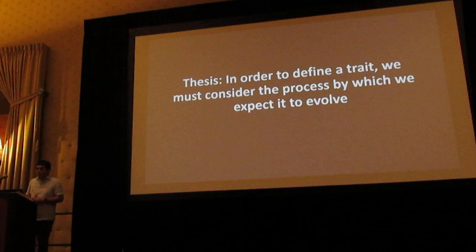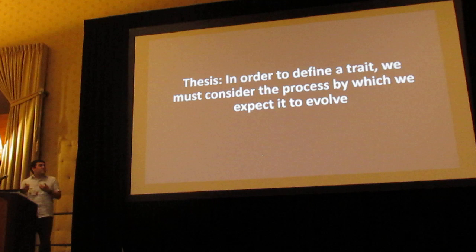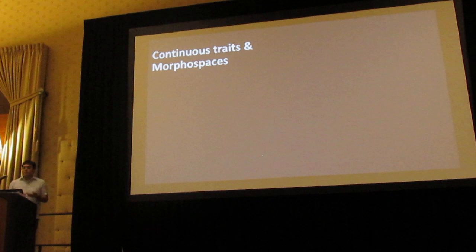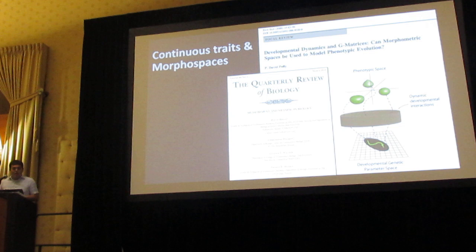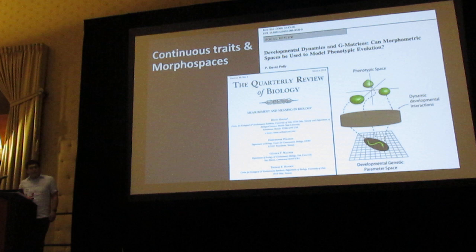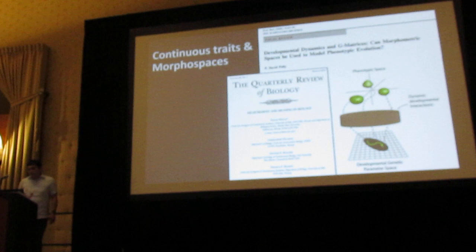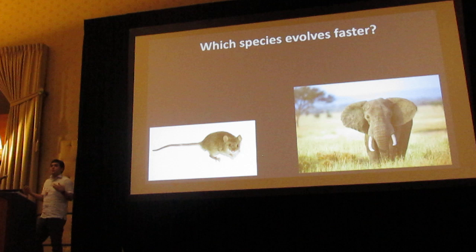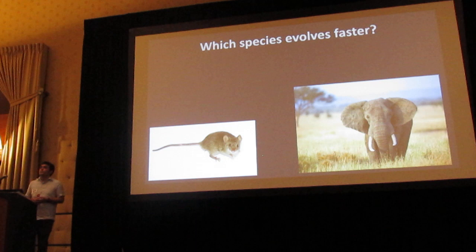My thesis for this talk is that in order to define a trait, we actually need to consider the process by which we expect it to evolve from the very beginning. I'm going to use a well-known example dealing with continuous traits and morphospaces — inspired by papers on measurement and meaning in biology by David Polly and colleagues, and a paper by David Polly on developmental dynamics and the G matrix. I'll ask you a simple question: which of these species evolves faster — an elephant or a mouse?